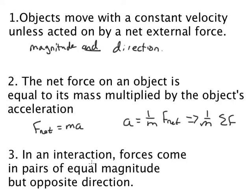The third of Newton's laws is that in an interaction forces come in pairs of equal magnitude but opposite directions. So what this says is there's two objects A and B. The force on B due to A is equal to minus the force from B on A.